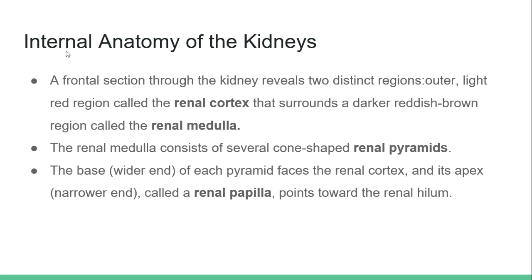A frontal section of the kidney reveals two distinct regions: the outer light-red region called the renal cortex, that surrounds the darker reddish-brown region called the renal medulla.